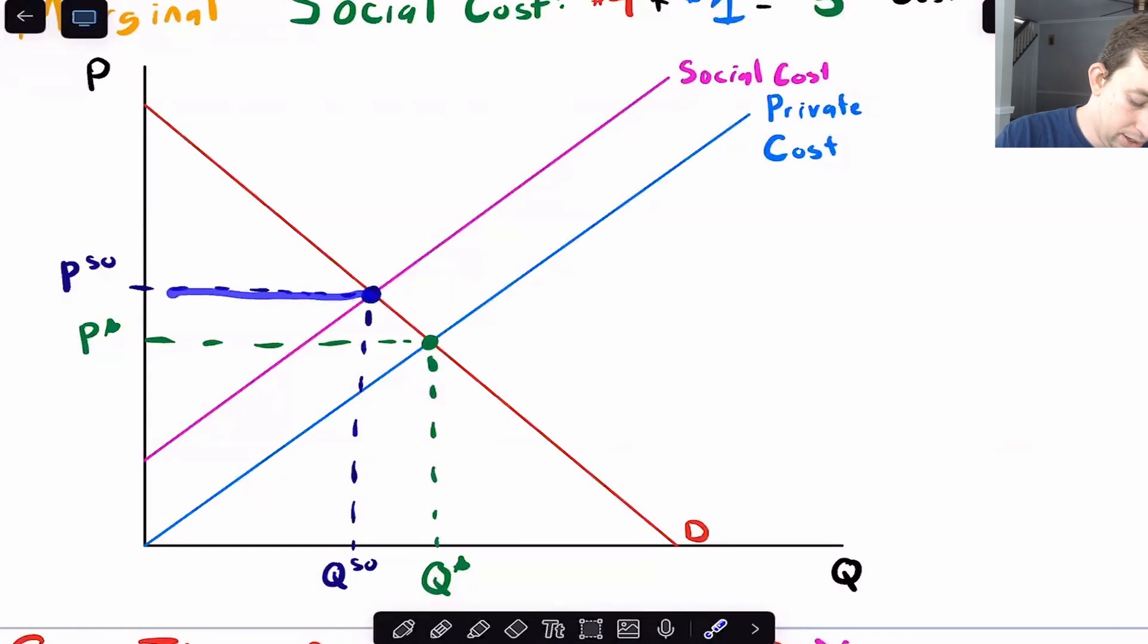the price is going to be higher. Because if we have a lower quantity, we're going to have a higher price. So this makes a lot of sense.